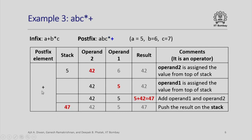Let us look at the plus operator that we encounter next. When plus comes, remember we had 5 and 42 on the stack. The 42 value is assigned to operand 2 as before. In the next operation we take the second operand from the stack and put it in operand 1. Now we have operand 1 and operand 2 as 5 and 42. When we perform the plus operation the result will be 47. As per our logic we push that result, 47, on the stack. Since there is no more character left in the postfix string, we conclude that this is the final result and we pull that result out of the stack and display it.